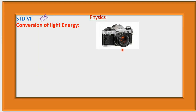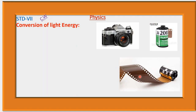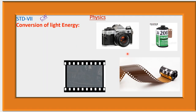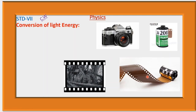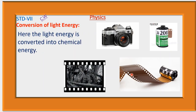This is a photographic camera — an old camera that uses a photographic film. Nowadays we use digital cameras where no photographic film is needed. In this old camera, a photographic film is used. When light falls on this photographic film, the image of the object is produced, a chemical reaction occurs, and light energy is converted into chemical energy. Here the light energy is converted into chemical energy.